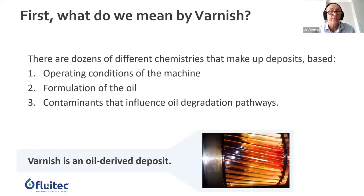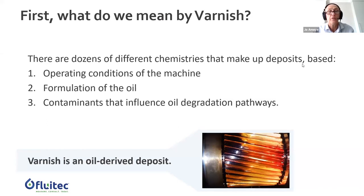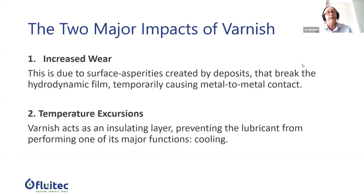One thing you certainly cannot do is generalize — there are really dozens of chemistries in varnish. It is very dependent, first of all, on the operating conditions of the equipment: think about whether it is a steam turbine working in base load versus a compressor on a gas turbine running 24/7 at peak load. It also depends on the formulation of the oil — consider the evolution that has been going on in the last decade — and last but not least, contamination, which influences all degradation and oxidation.